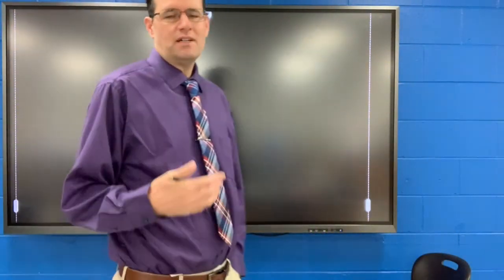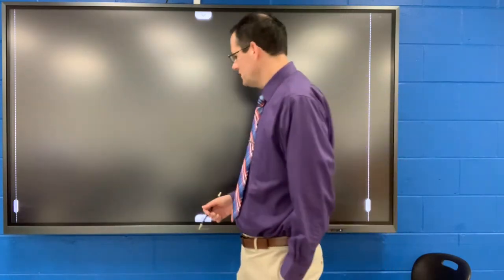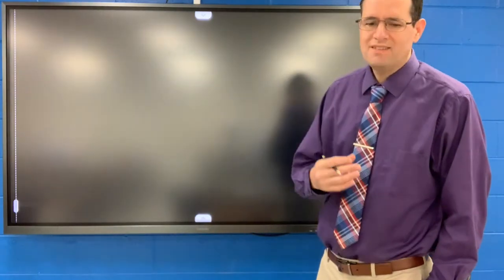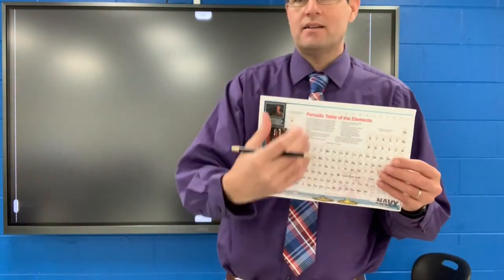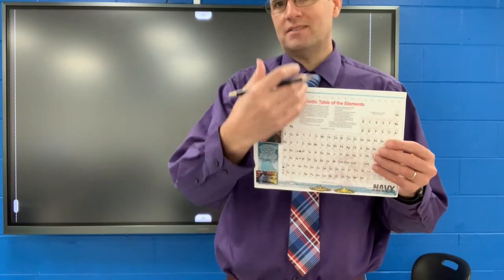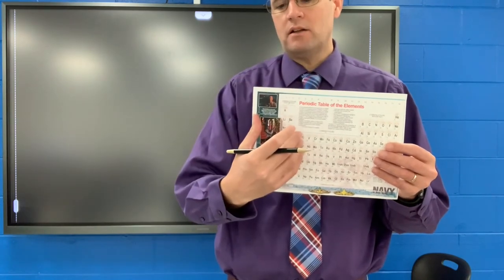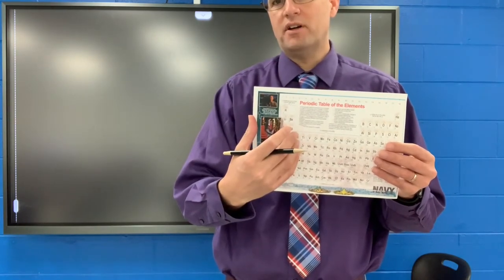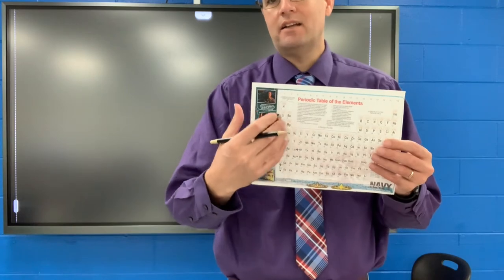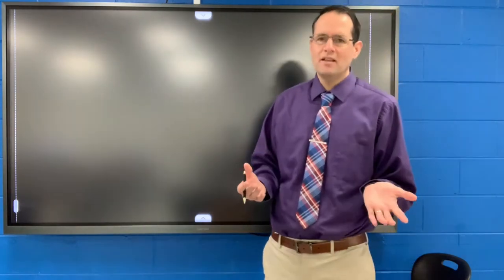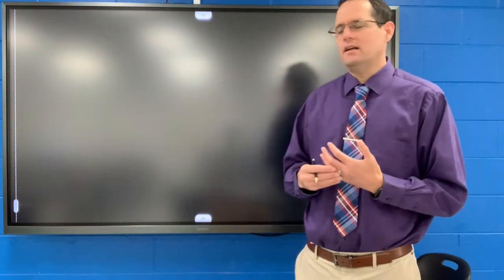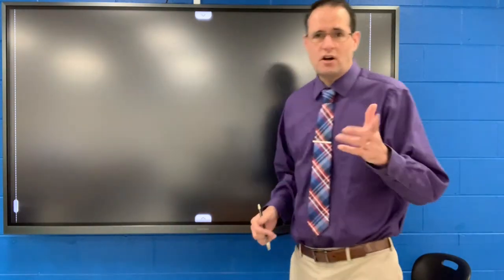Electrolytes are conductive and composed of an ionic compound. Pull out your periodic table — an ionic compound or salt is made from a metal on the left of the periodic table and a non-metal on the right. We're going to assume this substance is soluble and therefore be a strong electrolyte.